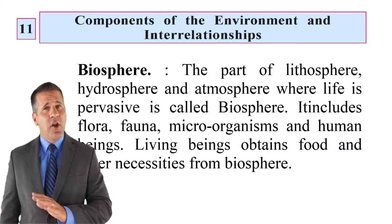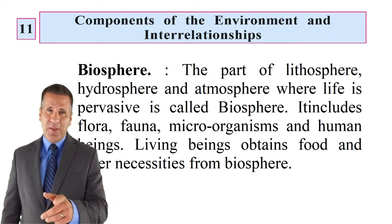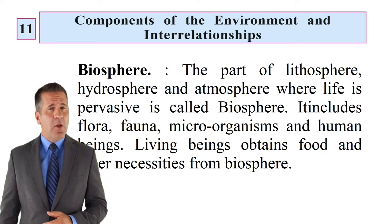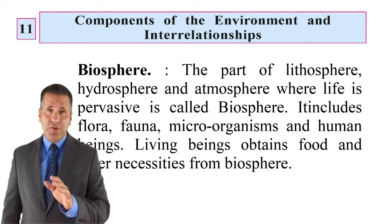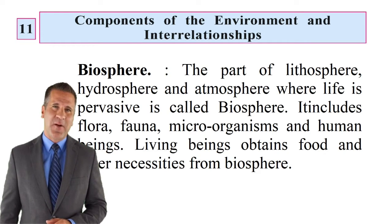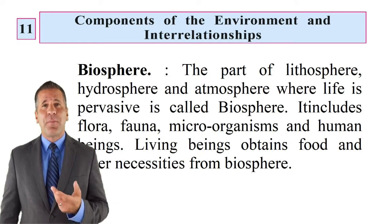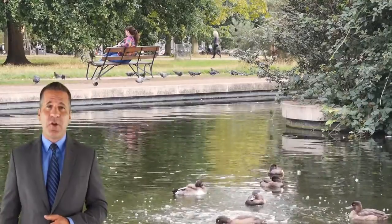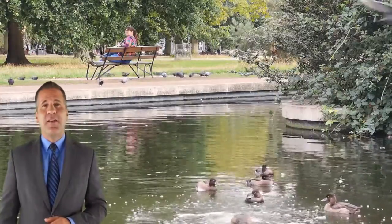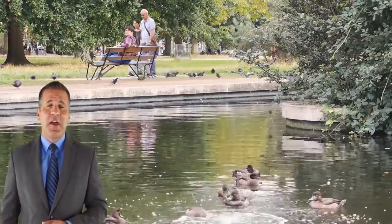Biosphere: The part of lithosphere, hydrosphere and atmosphere where life is pervasive is called biosphere. It includes flora, fauna, micro-organisms and human beings. Living beings obtain food and other necessities from the biosphere. जीवावरण: पृथ्वी पर मृदावरण, जलावरण और वातावरण के जिस भाग में जीव सृष्टि व्याप्त है उसे जीवावरण कहते हैं। इनमें वनस्पति, प्राणियों, जीव-जंतुओं और मानव का समावेश होता है। सजीव सृष्टि की खुराक और अन्य आवश्यकताएं जीवावरण में से प्राप्त होती हैं।